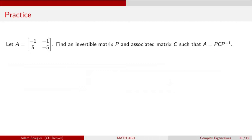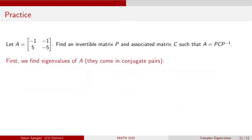So let's consider matrix A, which is a 2 by 2 matrix where the first column of A is minus 1, 5, and the second column is minus 1, minus 5. First, we want to go ahead and find the eigenvalues for this matrix.